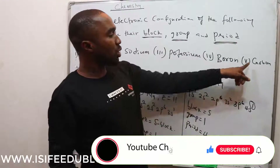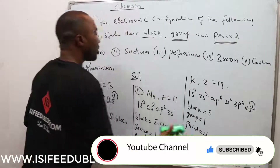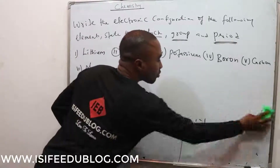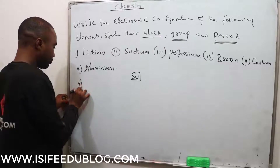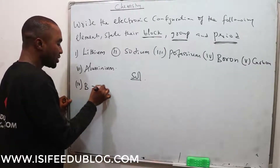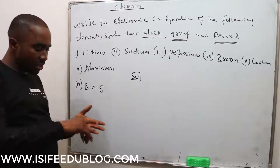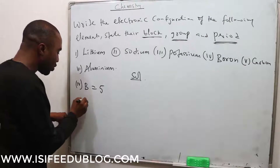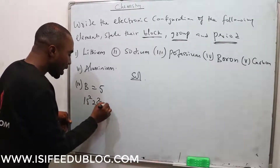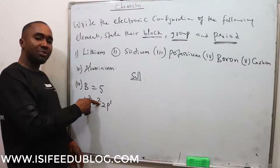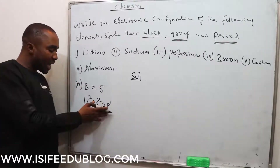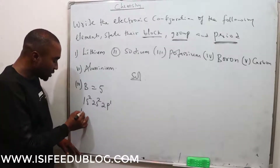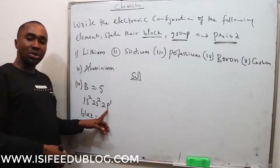The remaining elements — boron, carbon, and aluminium — are P-block elements. Boron has atomic number 5: hydrogen, helium, lithium, beryllium, boron — the 5th element. The electronic configuration is 1s² 2s² 2p¹ — that is 2 plus 2 plus 1 equals 5. This element is a P-block element because the electronic configuration ended in a P orbital. So the block is P-block.